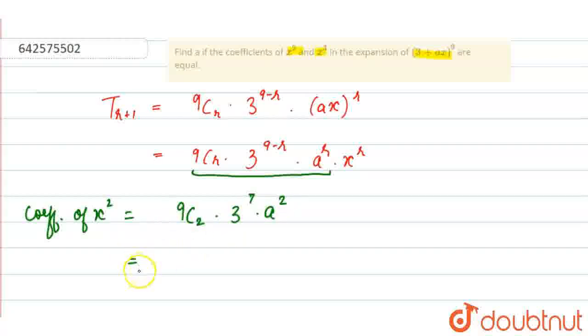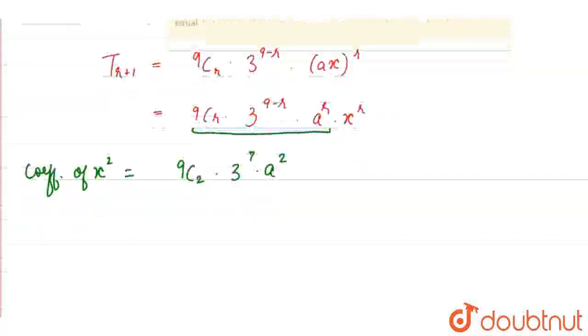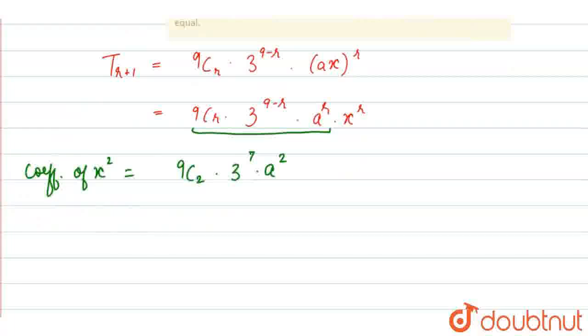First of all, let's write the coefficient of x cubed also, then we will equate these values. For coefficient of x cubed, we will put r equals 3, then we will get the coefficient of x cubed. So this will be 9C3 times 3 to the power 6 times a to the power 3.